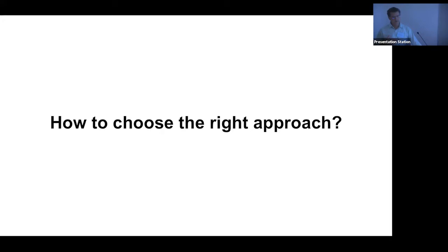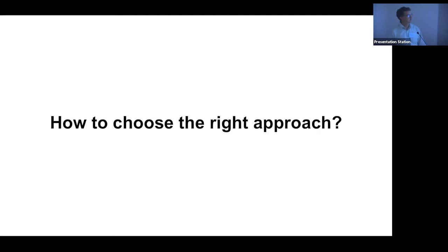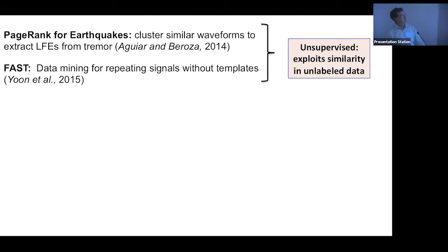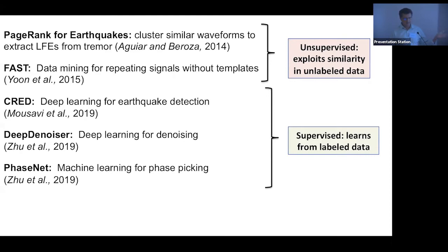One of the issues is how to choose the right approach. We're slow enough at doing our science that the right approach is a moving target, which tends to motivate one to stay closely connected to real data scientists who do this full time. We use a data mining algorithm that uses locality sensitive hashing — that was the core of Clara Yoon's thesis and aspects of Carrie Ann's thesis as well. That's an unsupervised method that exploits similarity in unlabeled data sets. For other applications like earthquake detection, denoising, and phase picking, we use labeled data — those are supervised methods.